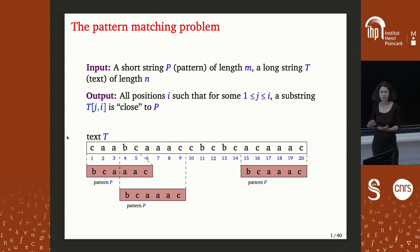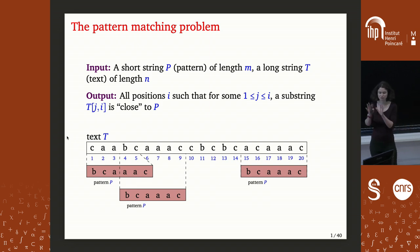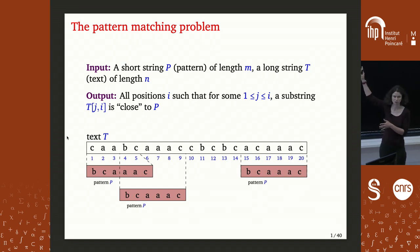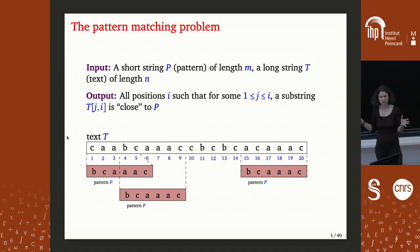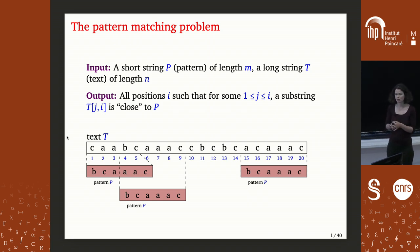You've probably seen this problem at least once during a basic algorithms course, but just in case I will remind you what the problem is. We are given a pattern, which is usually a short string of length M — let's fix the length to M — and we also have a long string T, which is usually called a text, with length N.